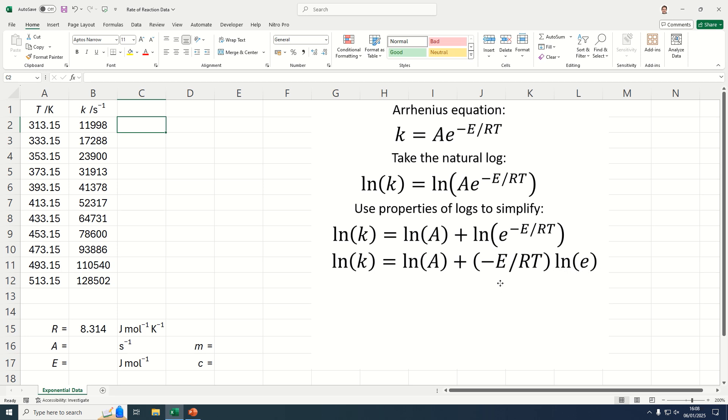Because natural log of e is 1, this will tidy up to just become ln(k) equals ln(A) plus minus E over R times 1 over T. And I've separated these two terms out, but that still represents what we had up here.